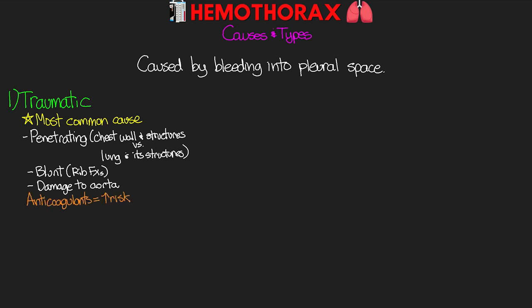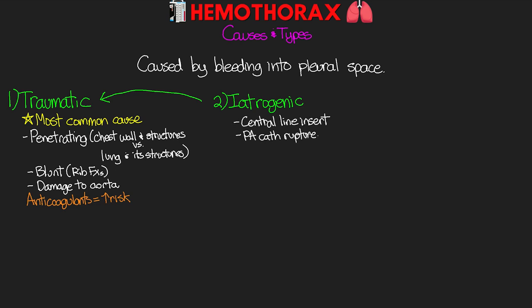Just like with pneumothoraces, we also have iatrogenic causes, which are also considered types of traumatic events. These can include subclavian central line insertion, PA catheter rupture of the pulmonary artery, lung biopsies, surgery, and CPR, just to name a few.